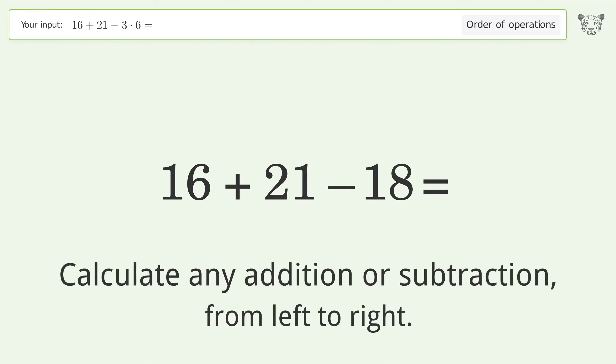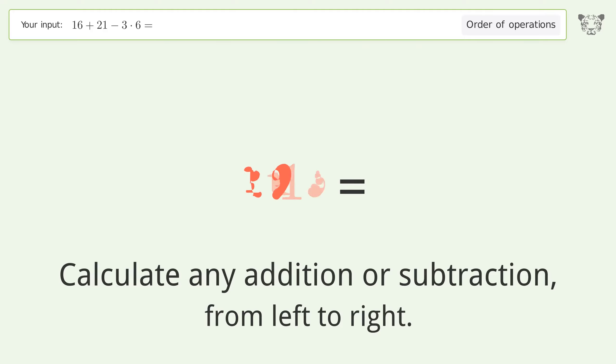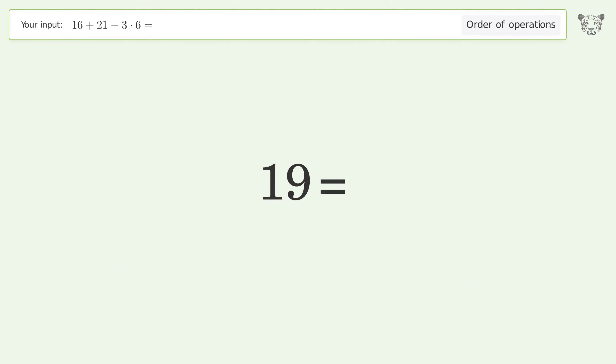Calculate any addition or subtraction from left to right: 16 plus 21 equals 37, minus 18 equals 19. And so the final result is 19.